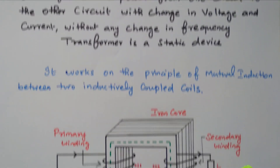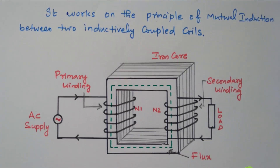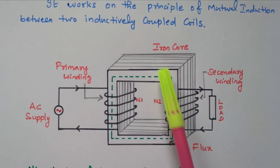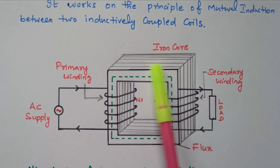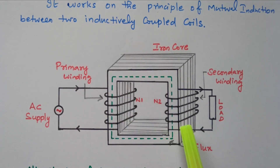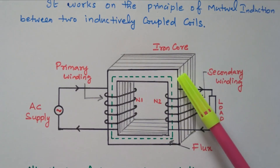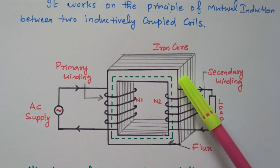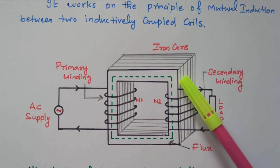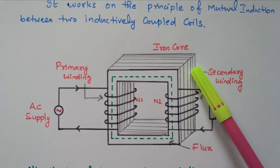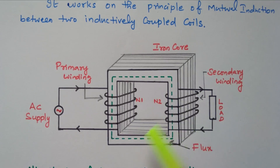Now we will see the diagram. An iron core is available — it is a laminated iron core. Thin sheets, like paper, are compressed together. N number of sheets are compressed together and it is laminated, with no contact between one sheet and the next within the core.